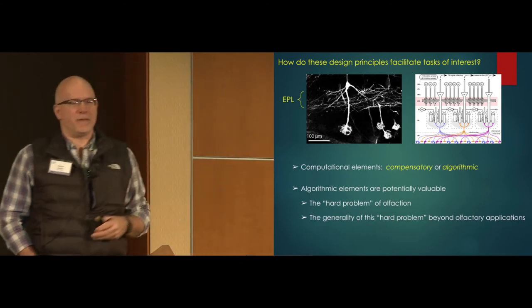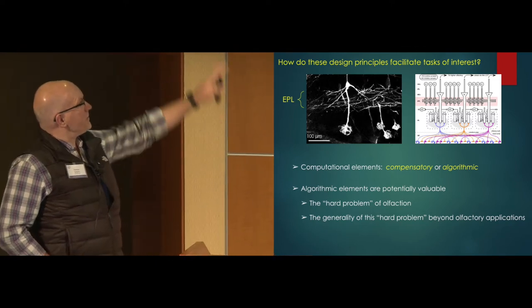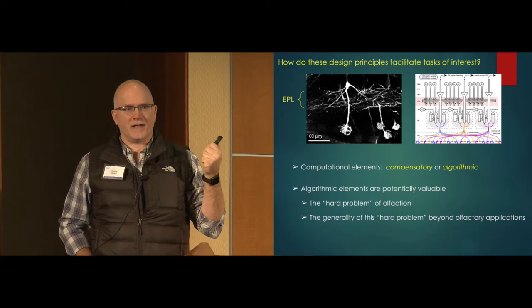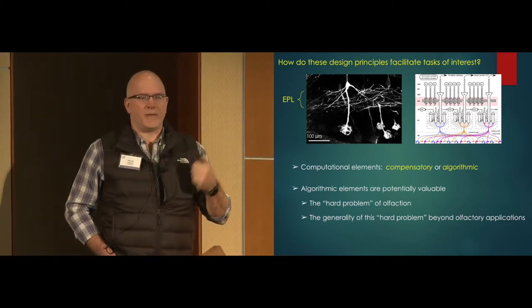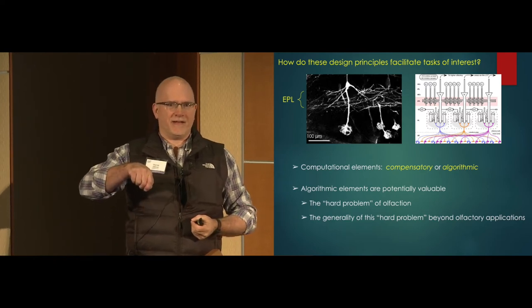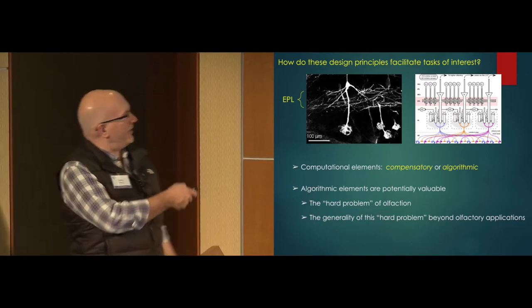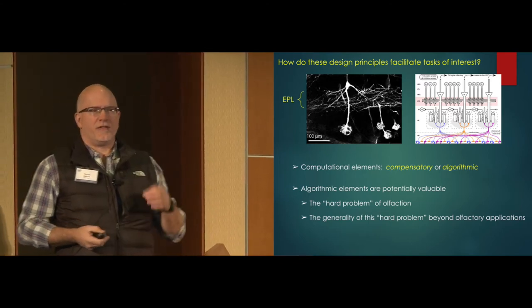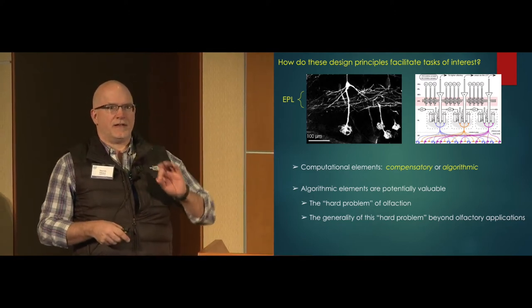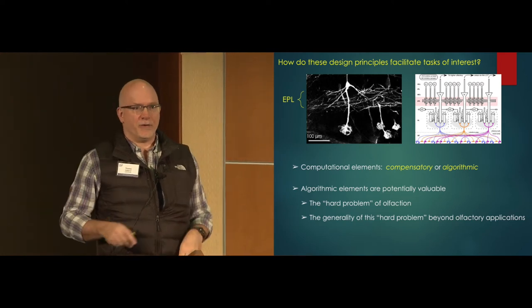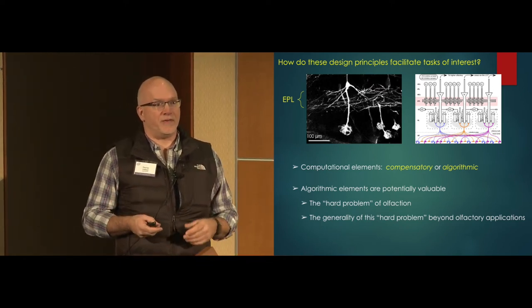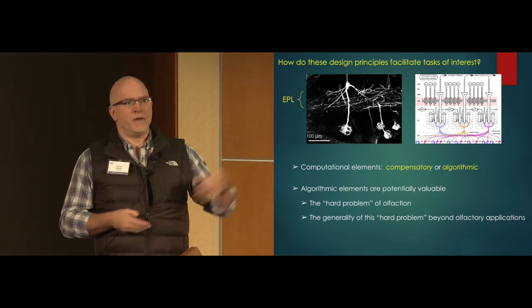We've long thought about when we're extracting algorithms from the biological olfactory system, both for artificial systems and for broader applications. We're always faced with the idea of which aspects are what we've called compensatory, which means aspects of the coding that compensate for the fact that your compute units are bags of saline, things you have to do because you're working with cells and not optimized materials. And the other ones are things that might be part of interesting algorithms that we could use in artificial systems. I'm going to use these today to illustrate our approach to what I think of as the hard problem in olfaction.